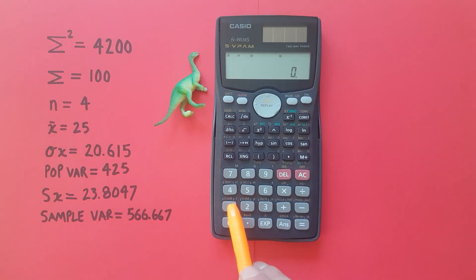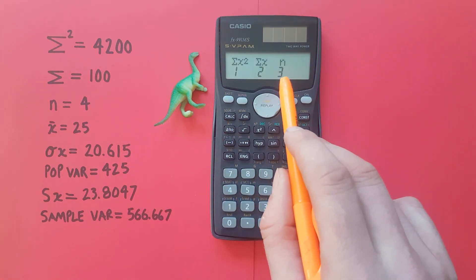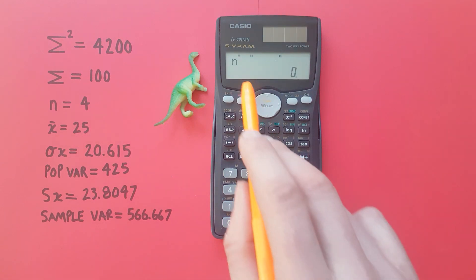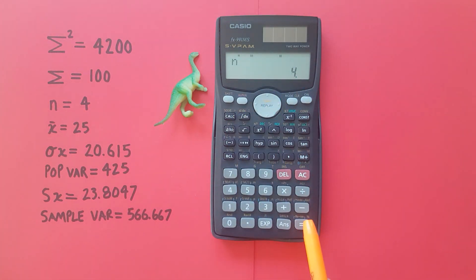And if we go shift 1 again and choose the third number, the n, this is the size of our data set or number of values. There's our 4 which we knew already.